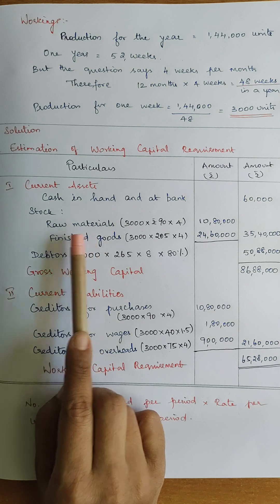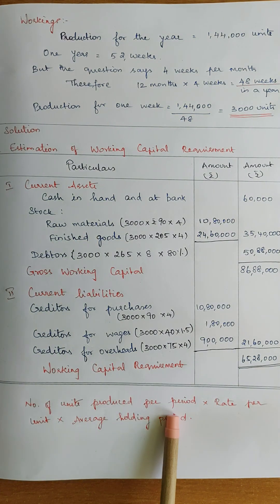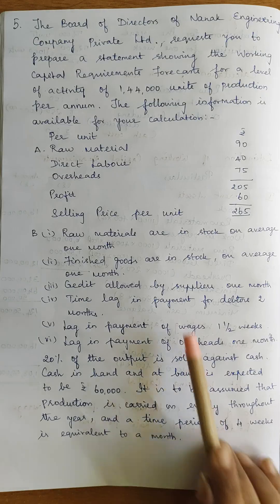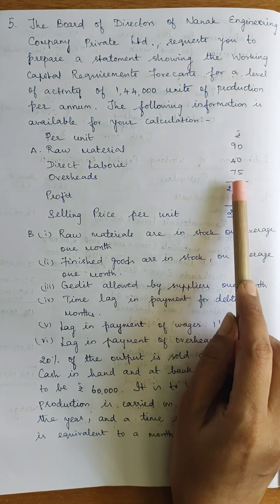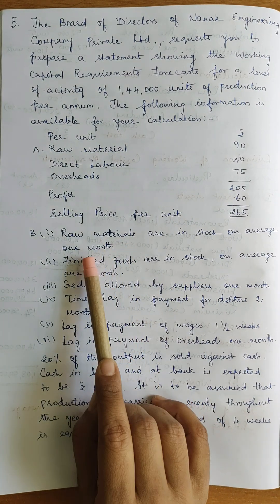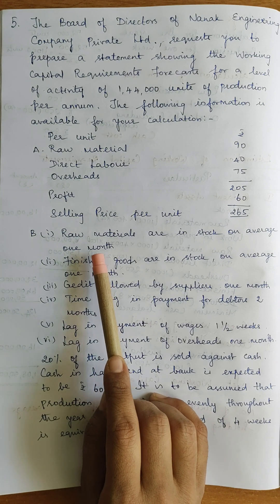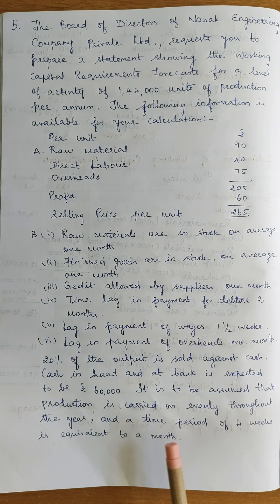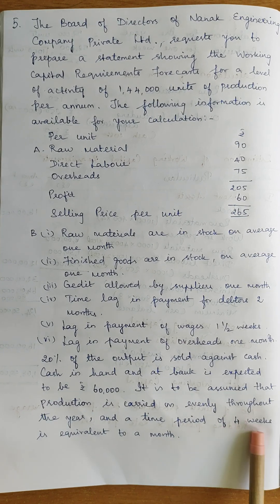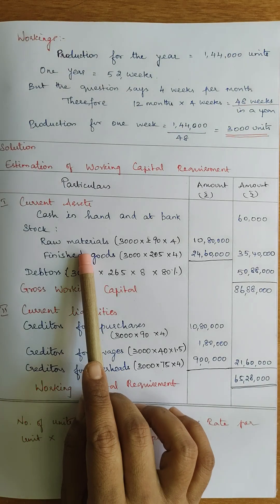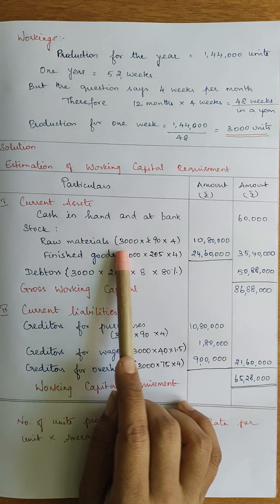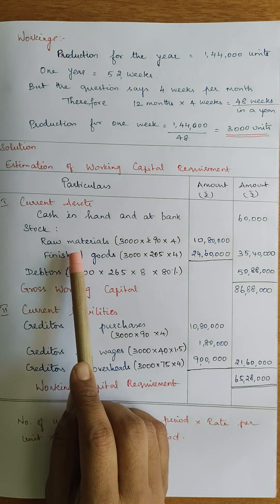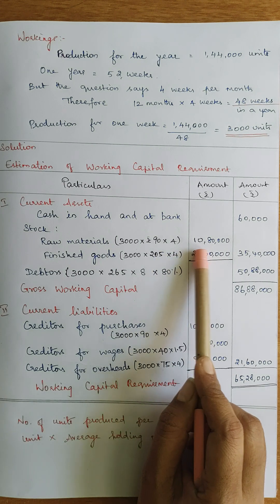Next is Stock — raw materials. Apply the formula: Number of units produced per period = 3,000. Into rate per unit for raw materials = 90 rupees. Into average holding period for raw materials = 1 month = 4 weeks. So raw materials stock = 3,000 into 90 into 4 = 10,80,000 rupees.